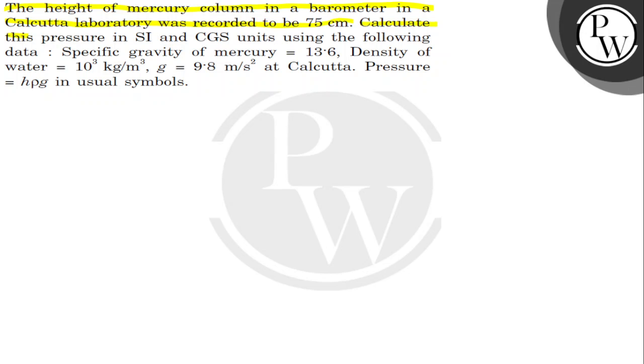Calculate this pressure in SI and CGS units using the following data. Specific gravity of the mercury is 13.6. Density of water is equal to 10 to the power 3 kg per meter cube.